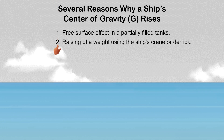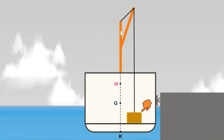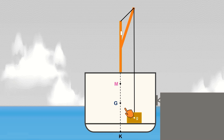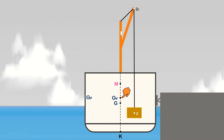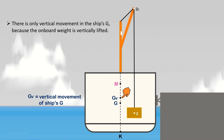Another reason why the ship's center of gravity rises is the raising of a weight using the ship's crane or derrick. Let's say a weight already on board will be lifted from the lower hold using the ship's lifting gear. Assuming that the weight's center of gravity is marked with small letter g, and the ship's center of gravity is along the centerline, as soon as the weight is lifted, the weight's center of gravity vertically moves to the derrick head at G1. The ship's center of gravity also moves vertically upward, parallel to the movement of the weight's center of gravity, to GV — where V stands for vertical movement. There is only vertical movement in the ship's G because the on-board weight is vertically lifted.